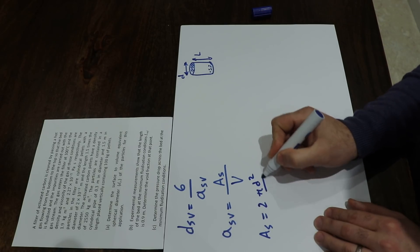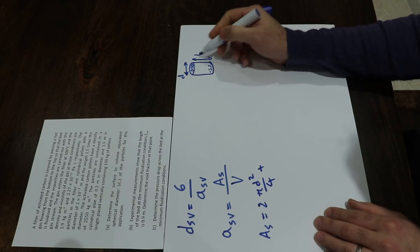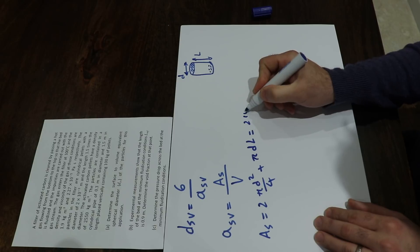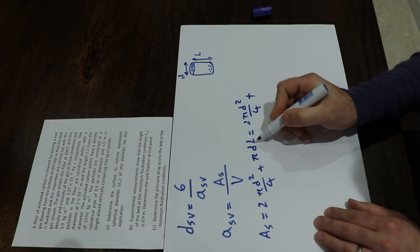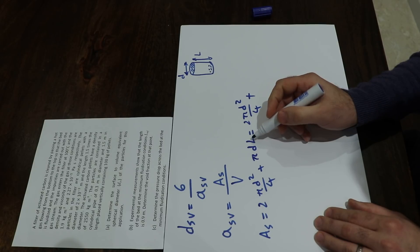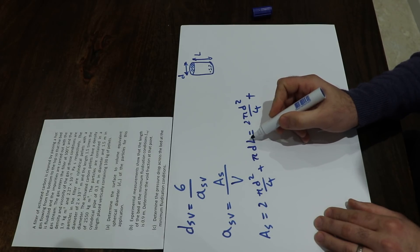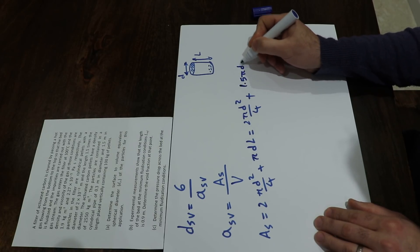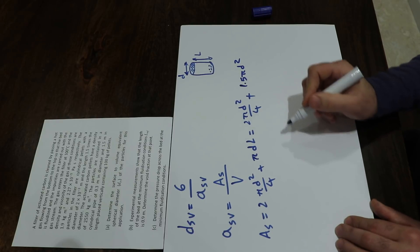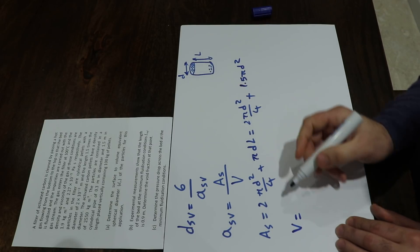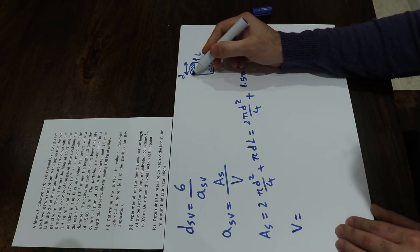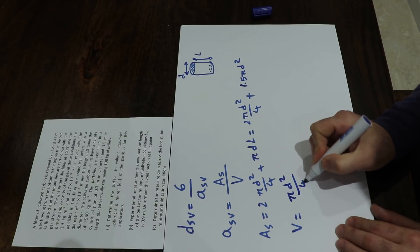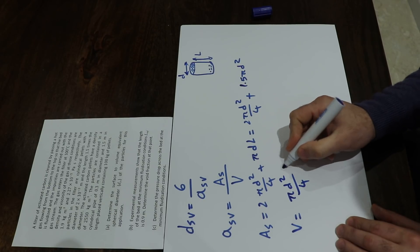The surface area A_S equals the area of the two circular faces, 2 times pi D squared over 4, plus the lateral area pi D times L. Since L equals one and a half times D, this gives 2 pi D squared over 4 plus 1.5 pi D squared. The volume of the cylinder is pi D squared over 4 times the height, which is 1.5 D.